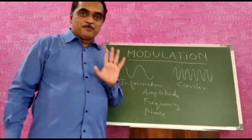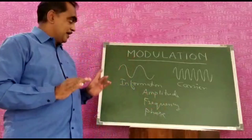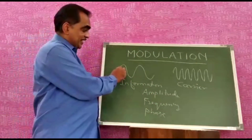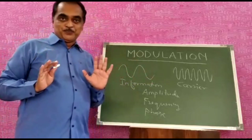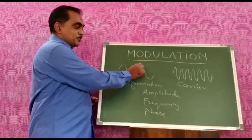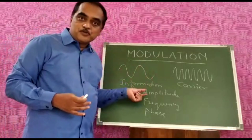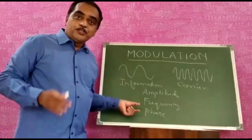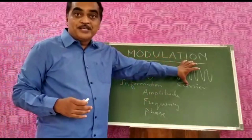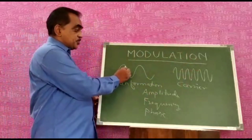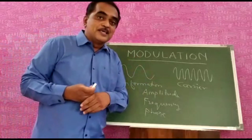One of these parameters — whether amplitude, frequency, or phase — can be varied according to the instantaneous value of the information or modulating voltage. How the information is varying, if you vary either the amplitude, frequency, or phase of the carrier accordingly, you get different types of modulation. For example, if you vary the amplitude of the carrier according to the instantaneous value of the information signal, you get amplitude modulation.